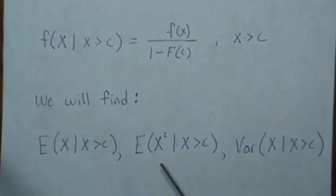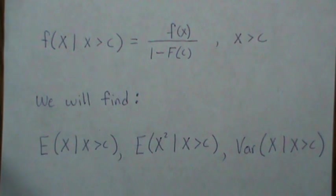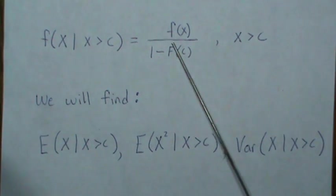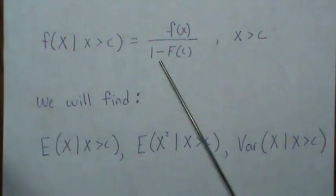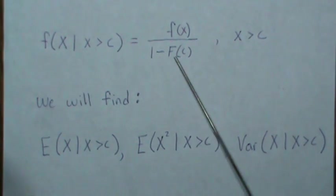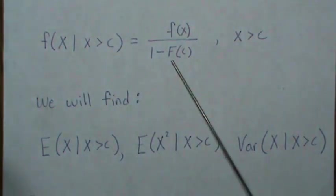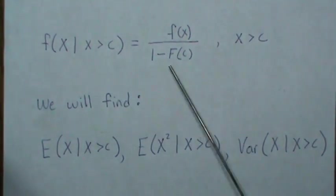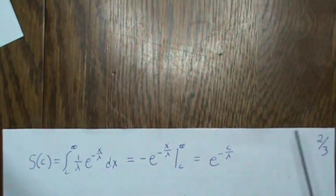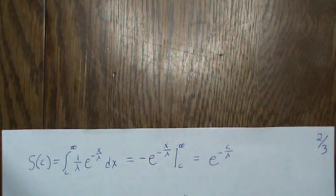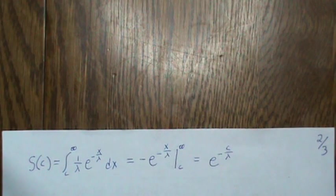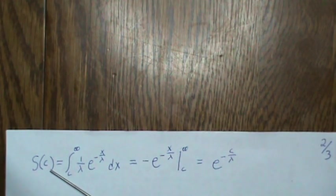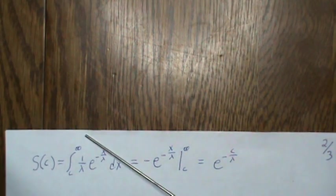We want to show or find the mean, the second moment, and the variance of this distribution. But first we're going to calculate this piece here which is sometimes called the survival function, it's one minus the cumulative distribution function. Because there's no X here this is a constant throughout our derivation so let's derive it first.